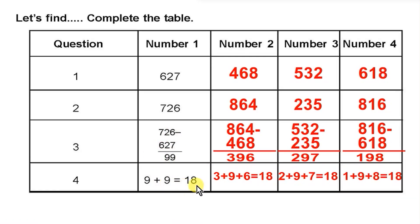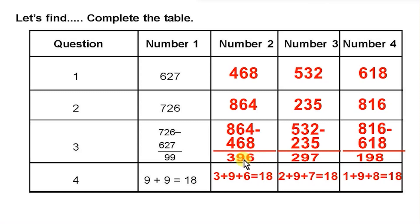Let's take another example: 468. Reverse the digits to get 864. Subtract: 864 minus 468 gives 396. Add the digits: 3 plus 9 plus 6. 3 plus 9 is 12, and 12 plus 6 is 18.